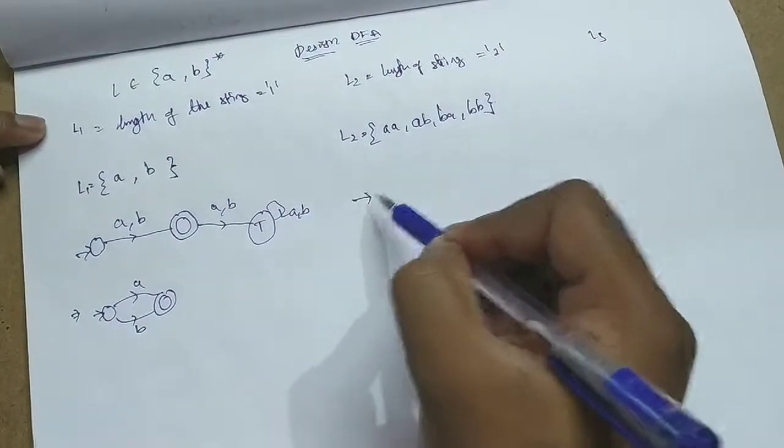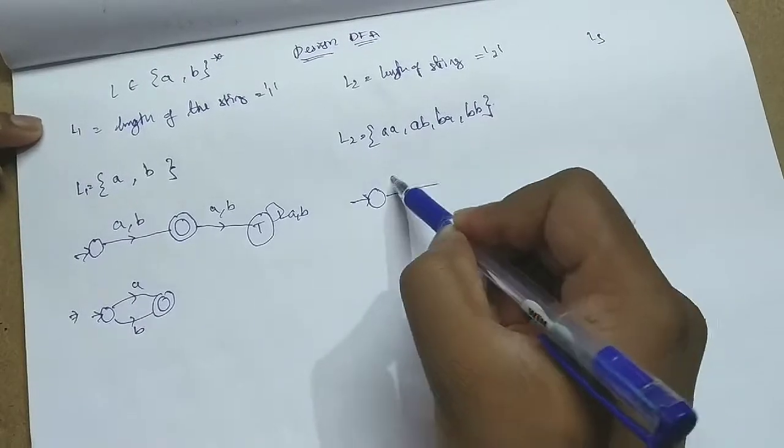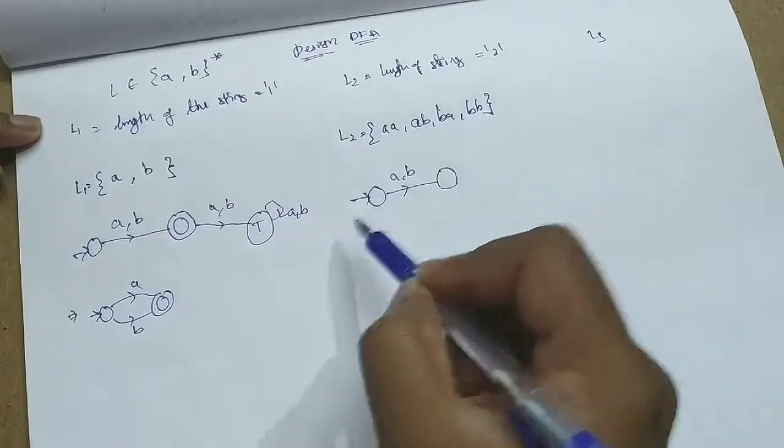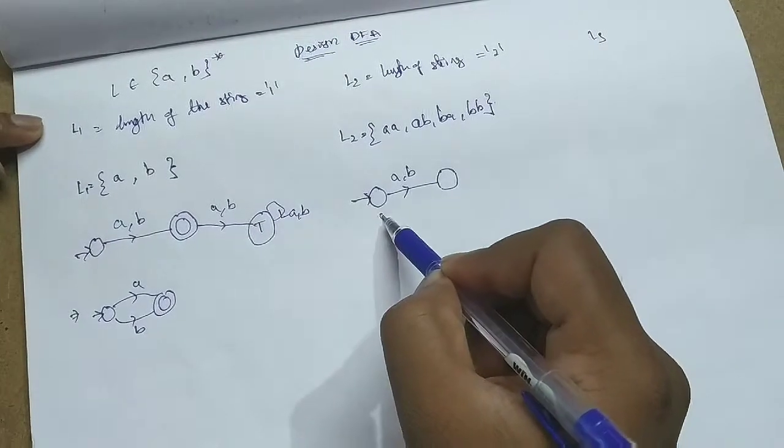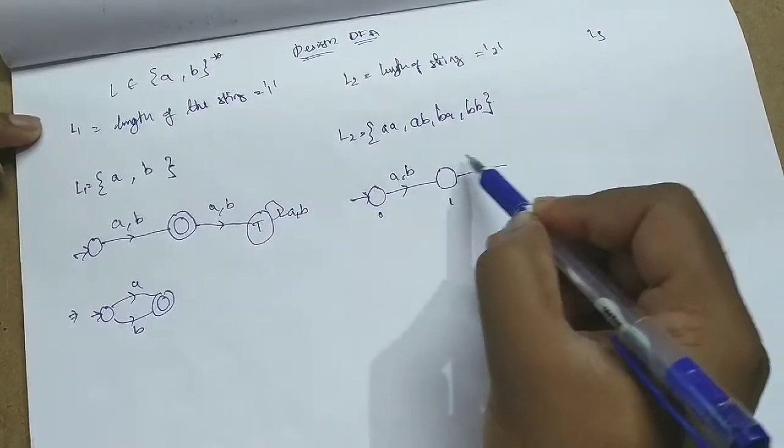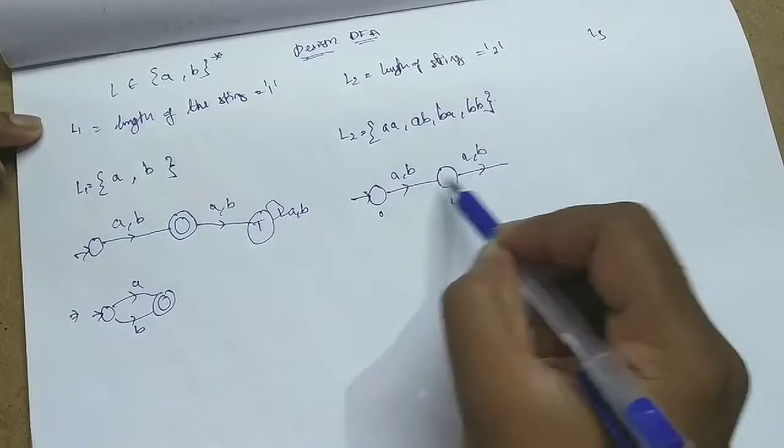Similarly, you will be having same kind of strings. On 'a', on 'a', on 'b', on 'a', on 'b', on 'a', on 'b', on 'a', on 'b', on 'a'.